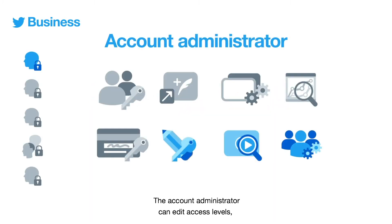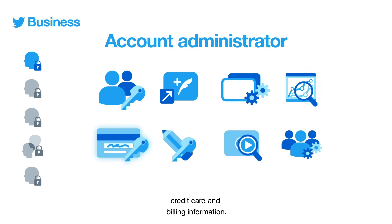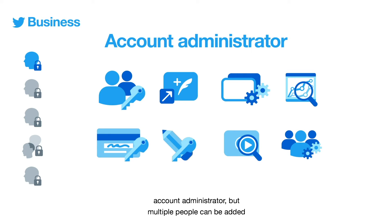The account administrator can edit access levels, post promoted only tweets, make changes to campaigns, and view performance data. They also have access to the account's credit card and billing information. Whoever set up the account becomes the default account administrator, but multiple people can be added to that permission level later.